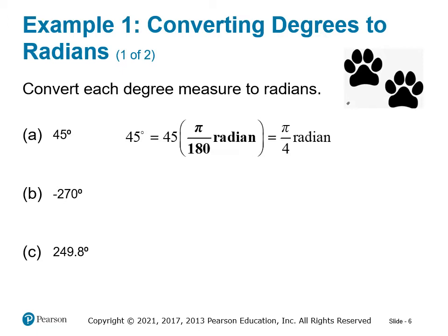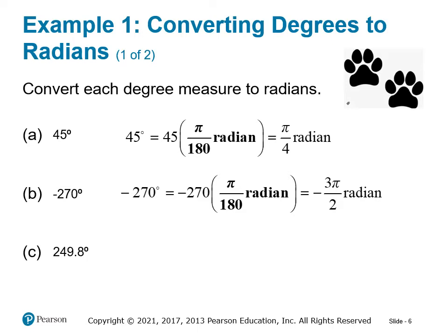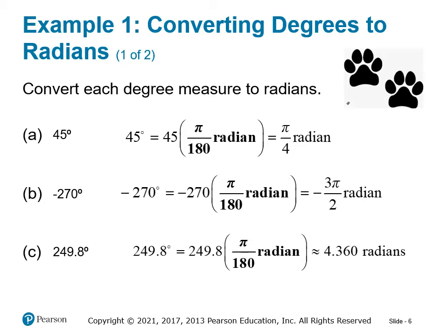For degrees to radians, we multiply by pi over 180. When we multiply 45 times pi over 180, we get pi over 4 radians. For part B, we have negative 270 degrees: negative 270 times pi over 180 gives us negative 3 pi over 2 radians.